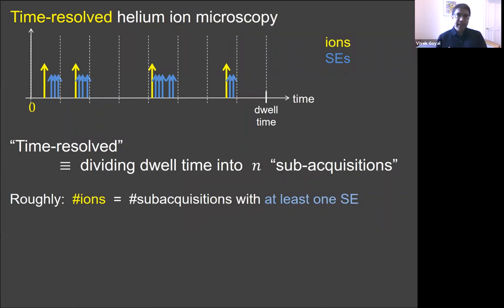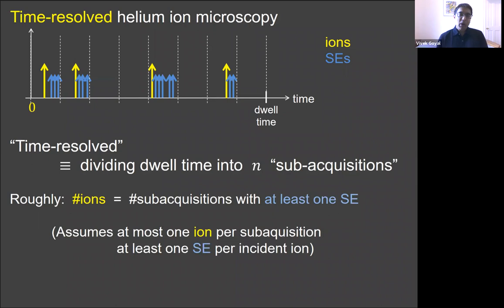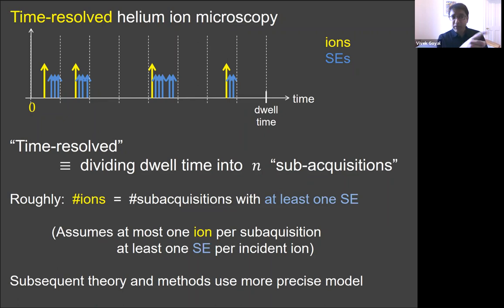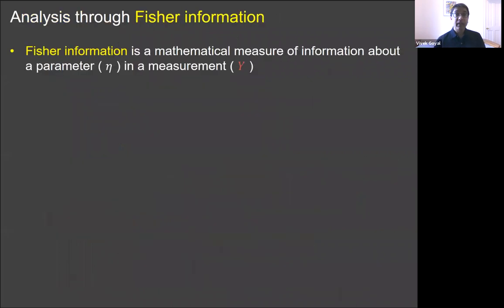We are able to almost completely compensate for this factor of eta plus 1. Our key idea is to introduce time resolution. This time resolution has nothing to do with a phenomenon associated with time ordinarily. We're not measuring time of flight, and we're not looking at dynamics of the sample. So it's a different use of time than earlier in this talk. Our use of time resolution is to divide the dwell time into n subacquisitions. When the subacquisitions are short enough, we can say roughly that the number of incident ions is the number of subacquisitions with at least one secondary electron. This is based on assuming at most one ion per subacquisition and at least one secondary electron per incident ion. So it's not an exact statement. It's for intuition or for a plausibility argument.